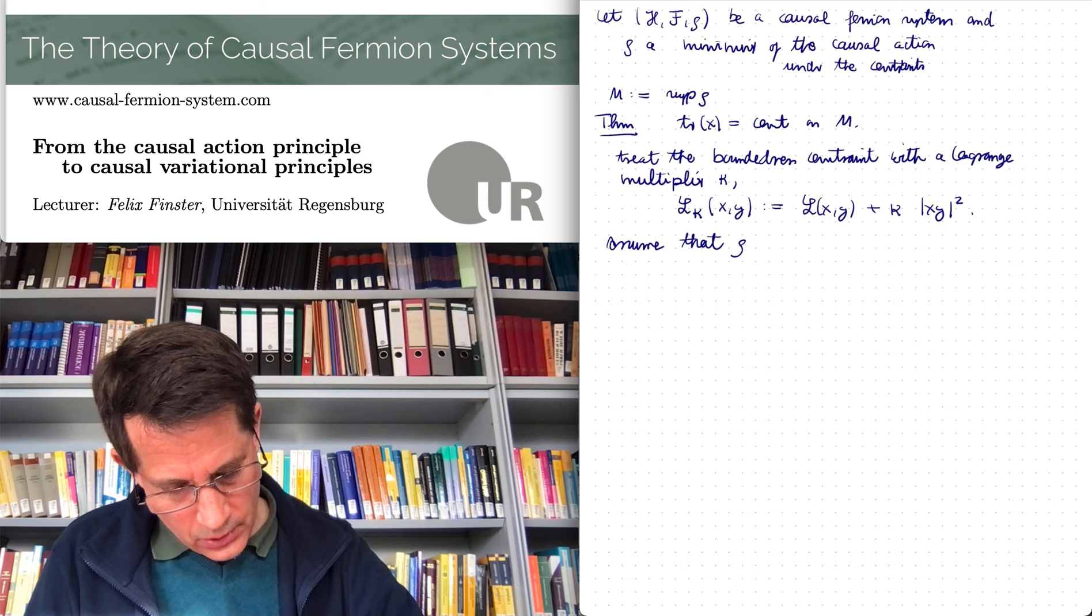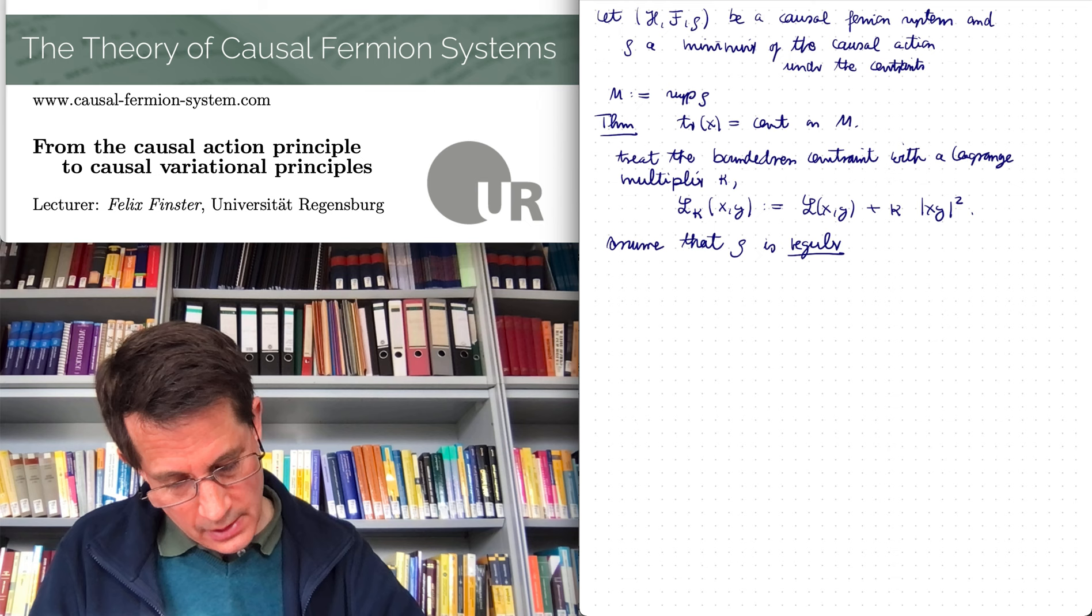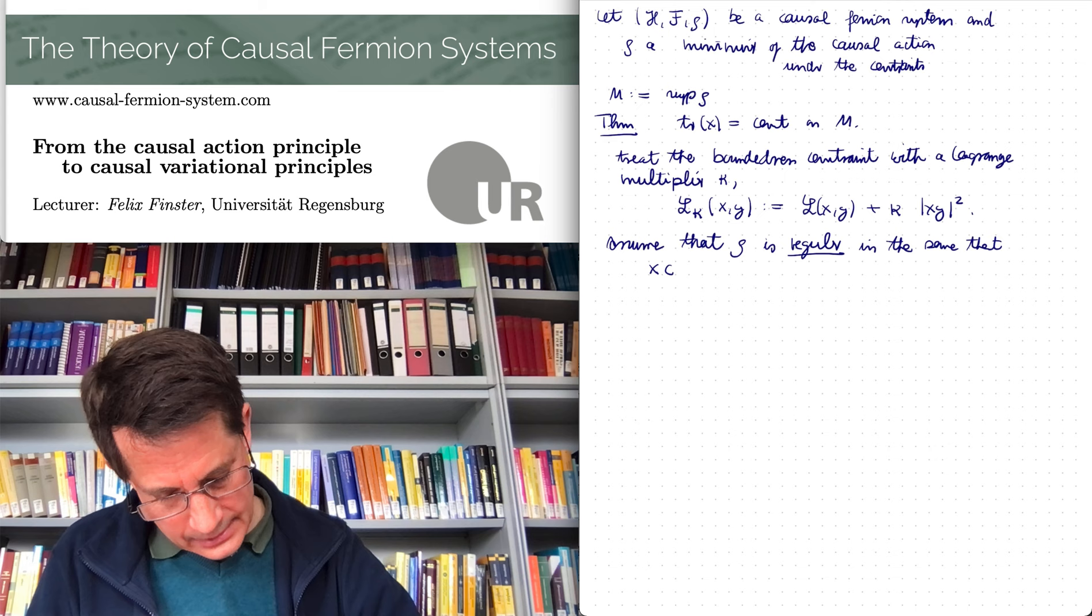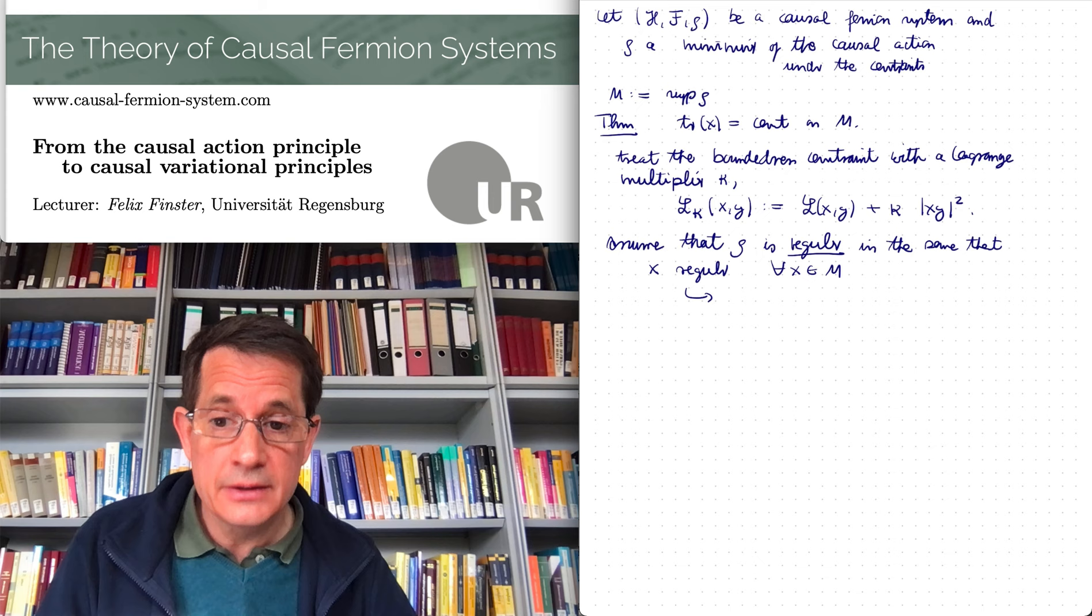What does this mean? We already had regularity of space-time points. Rho is regular means every space-time point is regular. Regular in the sense that x is regular for all x in M.